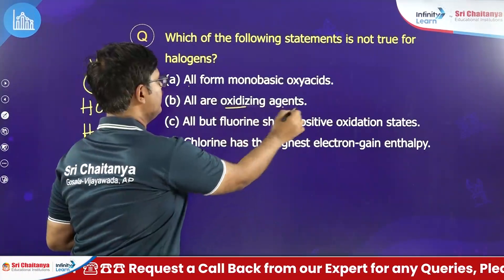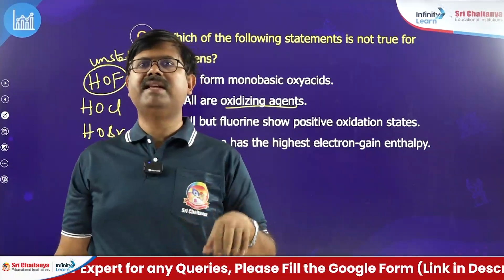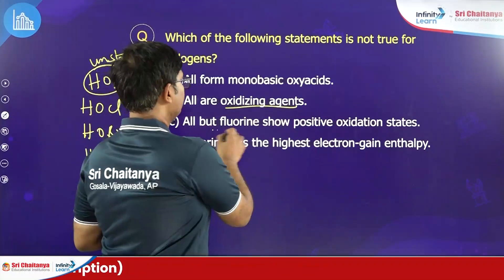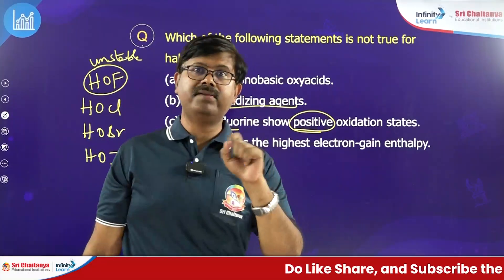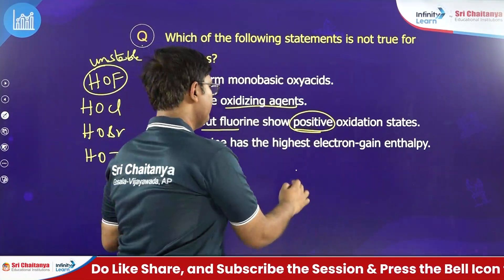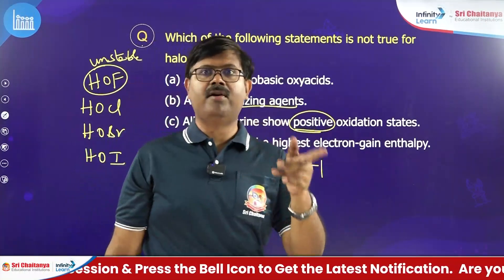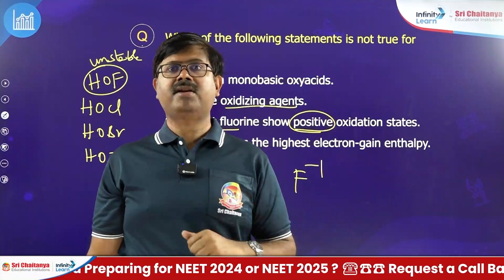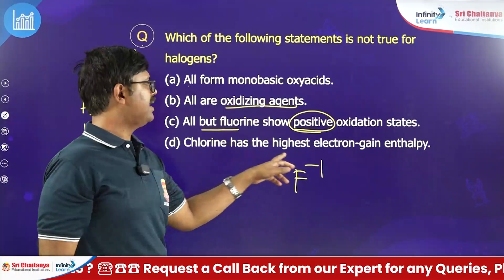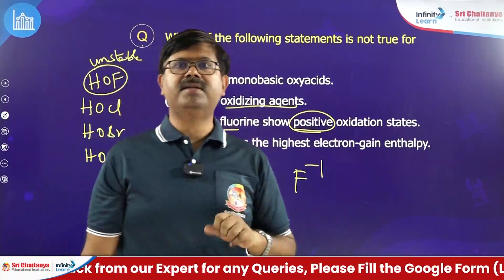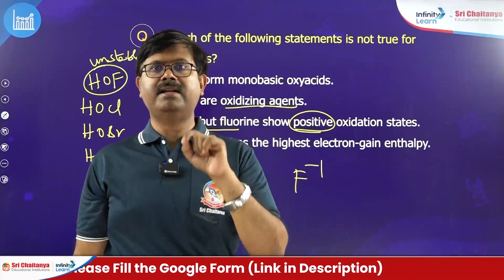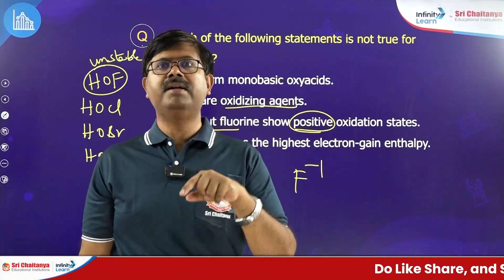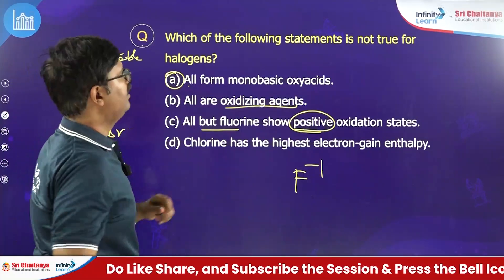Second: all are oxidizing agents — yes, all halogens are good oxidizing agents because they easily undergo reduction to the halide state. Third: all but fluorine show positive oxidation states — yes, all show positive oxidation states except fluorine, which exhibits only -1 in its compounds; chlorine and bromine can exhibit even +1 and higher oxidation states. Fourth: chlorine has the highest electron gain enthalpy — yes, among the halogens, not fluorine but chlorine has the highest electron gain enthalpy value. So these three are correct statements; only the first one is incorrect.